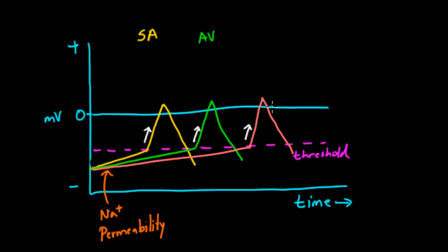But the amount of time it takes to get to threshold changes, because the bundle of His cells are going to be least permeable to sodium. The AV node would be somewhere in between, and the SA node are most permeable to sodium. That's why those lines are slightly less steep as you go along.